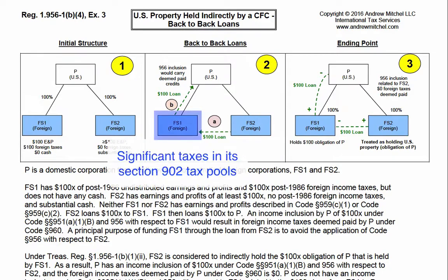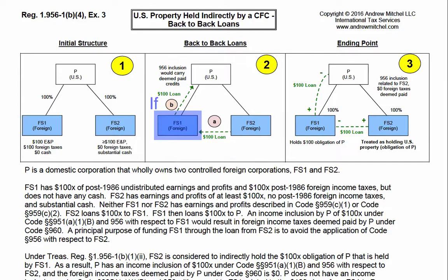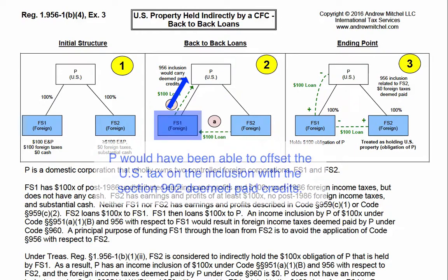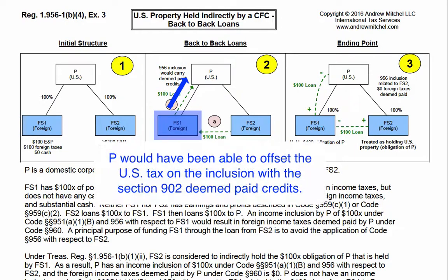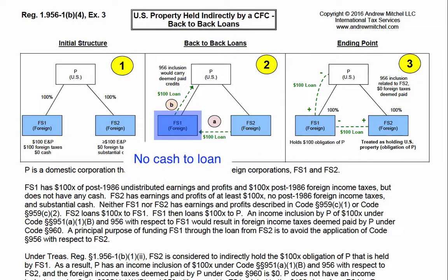On the other hand, FS1 had significant taxes in its Section 902 tax pools. If FS1 were to loan funds to P, P would have been able to offset the U.S. tax on the inclusion with the Section 902 deemed paid credits. But FS1 didn't have any cash to loan to P.